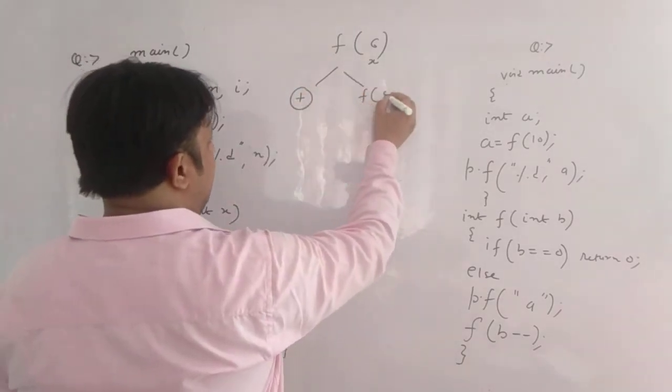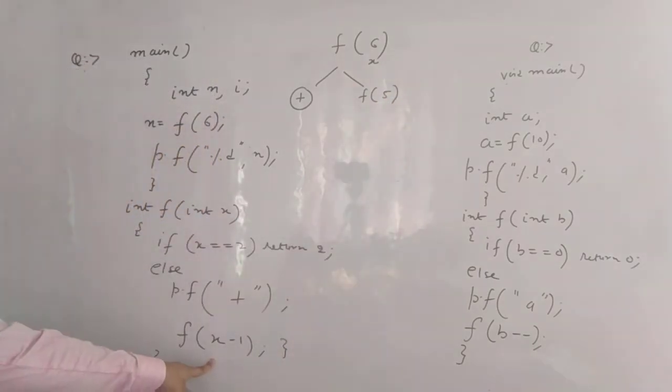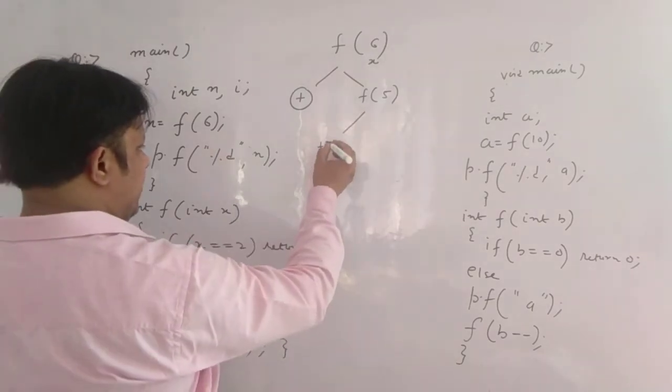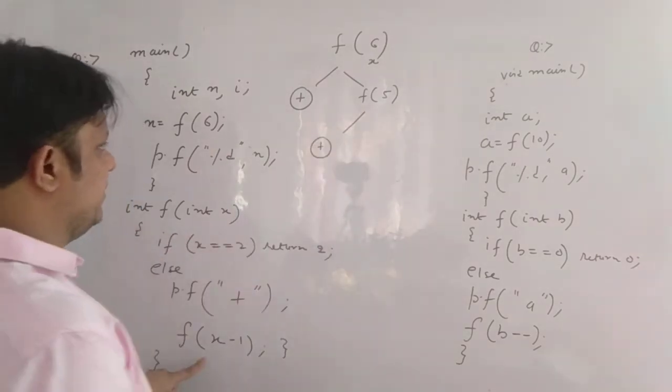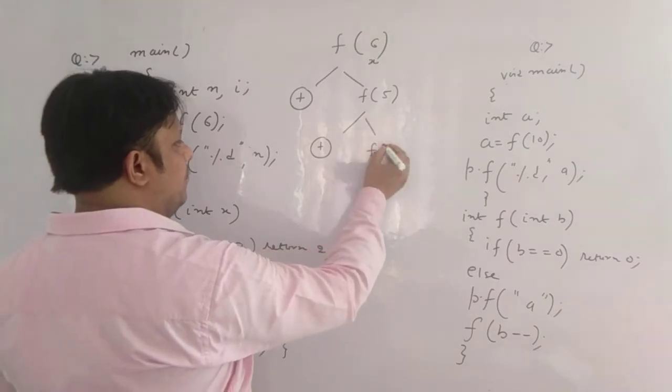So this is f(5). Now when you call this function f(5), your x is now 5. So x == 2, condition is false. So else print f plus. So again we are printing a plus here then your f(4).